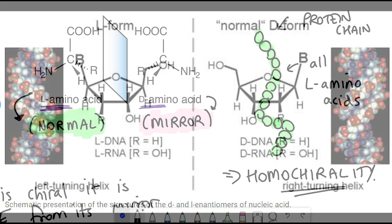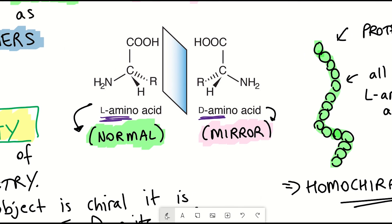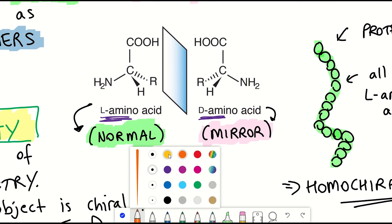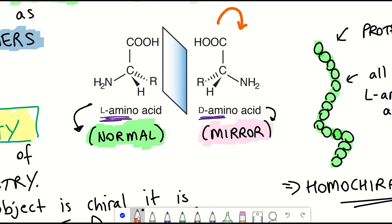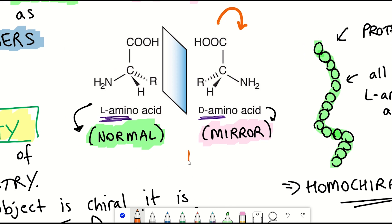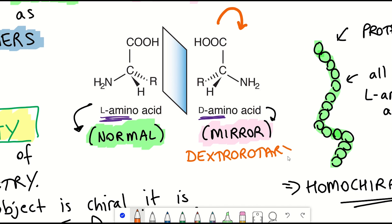And so this right versus left-handed, D versus L, refers to how chirality was initially defined for chemicals, whereby if polarized light is passed through a chiral molecule, the light is either rotated clockwise or anticlockwise. So if it's clockwise to the right, it's known as dextrorotary, whereby if it's anticlockwise to the left, it's known as levorotary.